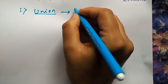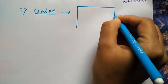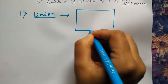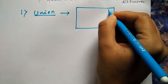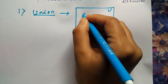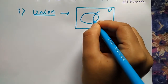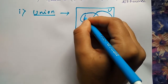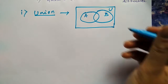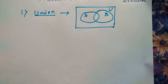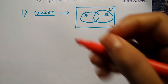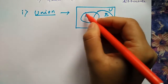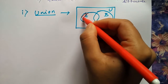Now we'll see the operations using Venn diagrams. First we'll start with union — how to represent the union diagram. This is the universal set, and if there are two sets A and B, then the union part is this complete whole thing, which is A union B.